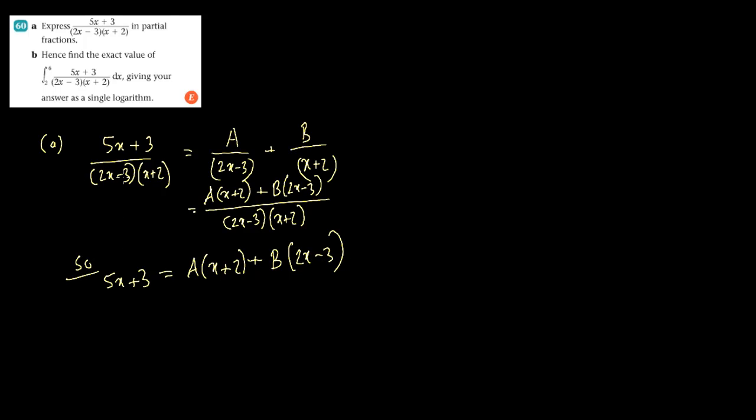What we do now is take the factors and find the values. So for this factor, the value of x, if you put 2x-3 equal to 0, it would be 3/2. So we put the value in both sides. For x equals to 3/2. On the left hand side, it would be 5(3/2)+3.